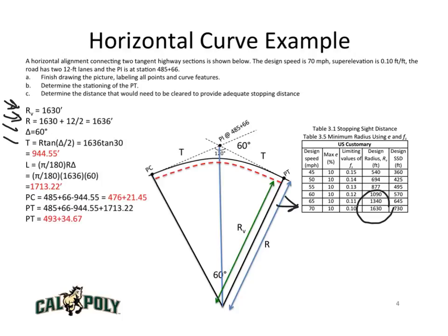You can determine what the tangent of 30 is, multiply by 1636, and you obtain a tangent length of 944.55 feet. That's the length from the PC to the PI, and then also from the PI to the PT along the dashed black tangent line.